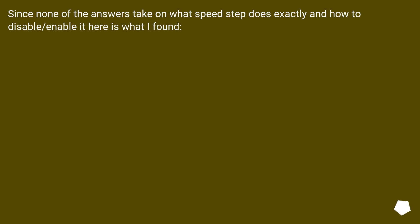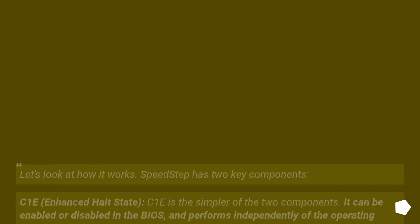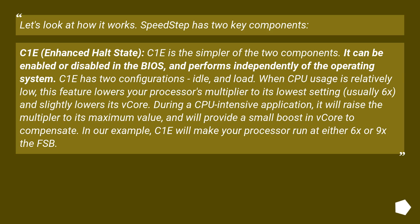Since none of the answers take on what Speedstep does exactly and how to disable/enable it, here is what I found. Speedstep has two key components. C1E, Enhanced Halted State, is the simpler of the two. It can be enabled or disabled in the BIOS and performs independently of the operating system. C1E has two configurations — idle and load. When CPU usage is relatively low, this feature lowers your processor's multiplier to its lowest setting, usually 6x, and slightly lowers its vcore.